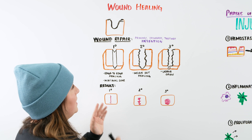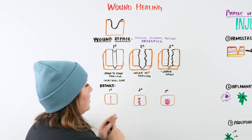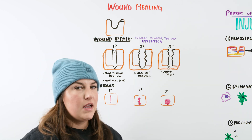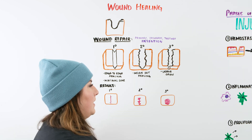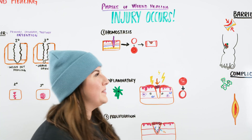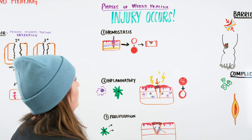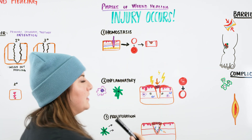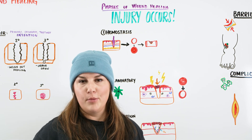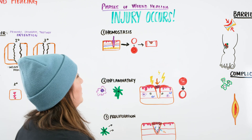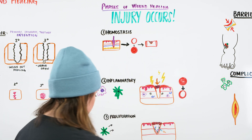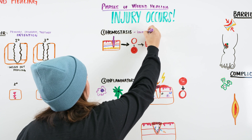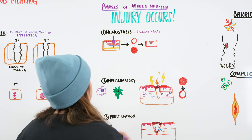Now that we understand how wounds can be repaired, let's talk about the phases of wound healing — how our body goes from injury to healed. First we have the injury: the patient gets stabbed, gets burned, and immediately we jump into the first phase, which is hemostasis. The cut disrupts and damages blood vessels, and those blood vessels start to bleed.